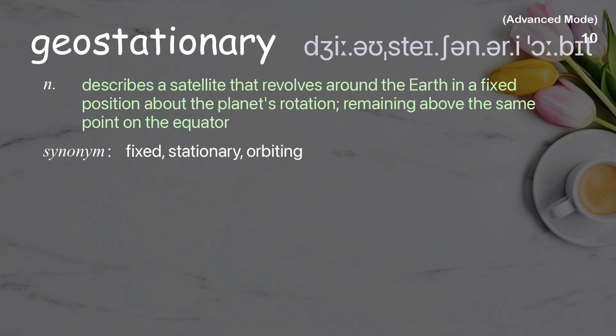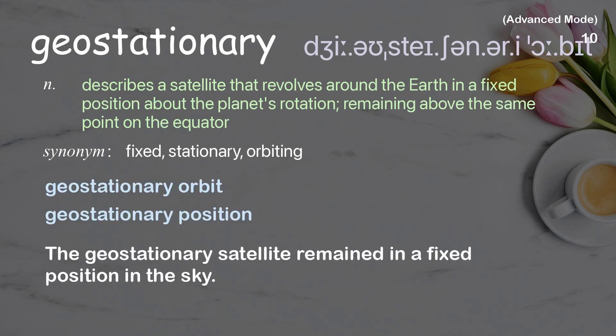Geostationary: describes a satellite that revolves around the Earth in a fixed position relative to the planet's rotation, remaining above the same point on the equator. Examples: geostationary orbit; geostationary position. The geostationary satellite remained in a fixed position in the sky.